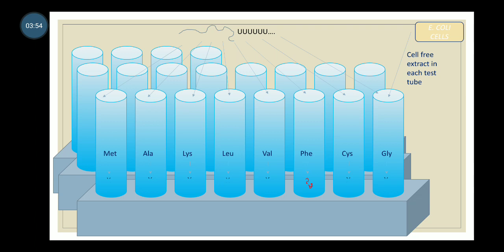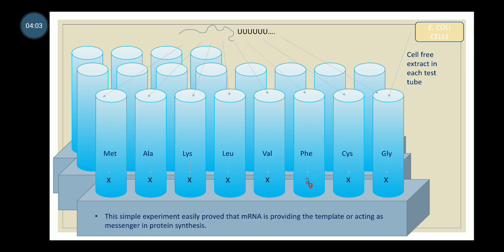They observed that all test tubes were blank, except in the case of phenylalanine, where something was produced. This simple experiment easily proved that mRNA provides the template and acts as a messenger in protein synthesis.